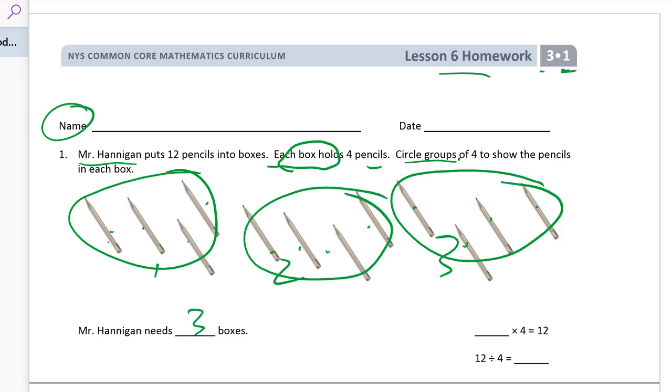And now this is the missing factor in a multiplication equation right here. That's the missing factor, and it's going to be the same as the quotient in our division equation there.